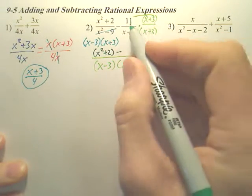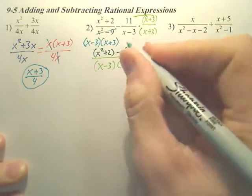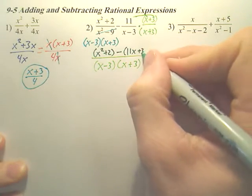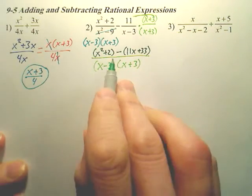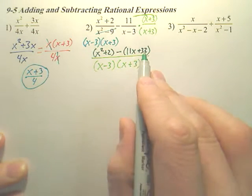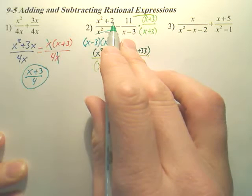And for this one, aren't you going to have this 11 multiplied through? So this is going to be 11X, and 11 times 3 is 33. You guys okay with that? We now have the same bottoms. This right here is 11X plus 33. This is X squared plus 2.